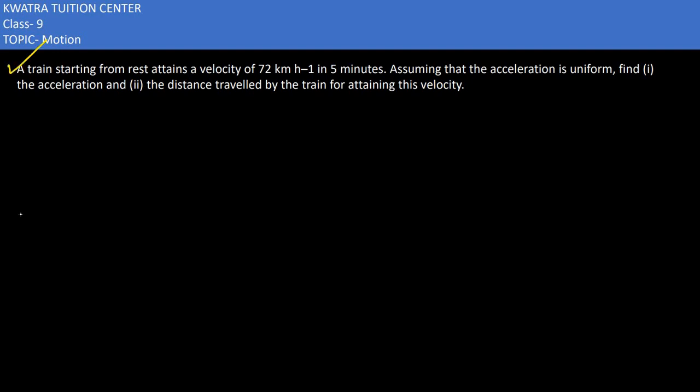Now we have the fifth question. It says train starting from rest. Rest means U equals 0. V in this case is 72 km per hour, and the time mentioned is 5 minutes.